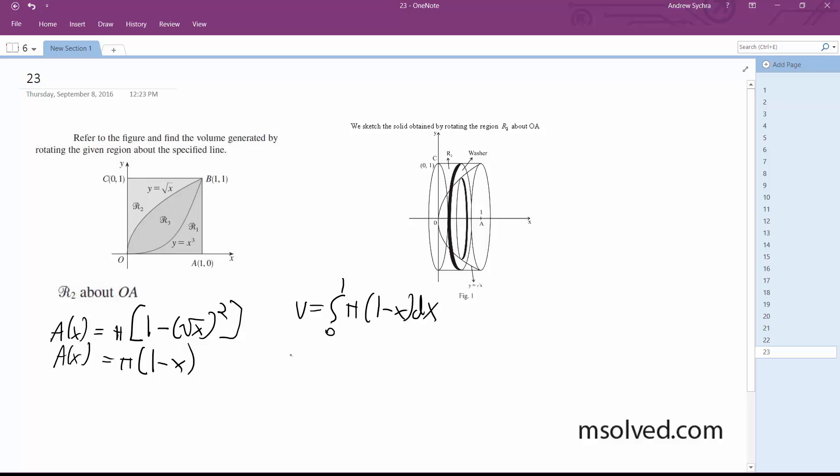Simplified, or integrated, this is equal to pi times (x minus x squared over 2) from 0 to 1, and we end up with pi times (1 minus 1 half), which is 1 half times pi, which is pi over 2. That's it.